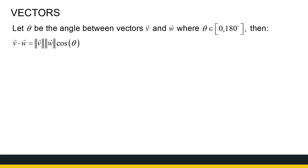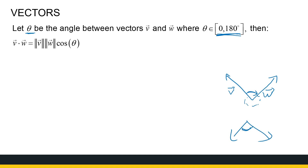One of the nicest uses of the dot product — and we're not going to prove this, but it can be proven — is that if I've got the angle theta between vectors V and W, theta is between 0 and 180 degrees, or if you're working in radians, theta is between 0 and pi. The reason we stick between 0 and pi is because if I've got two vectors V and W, I'm going to look for the shortest angle, not the biggest one. So it's always going to be between 0 and 180 degrees.